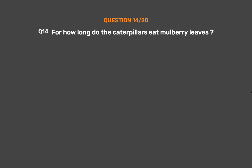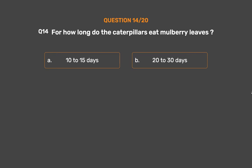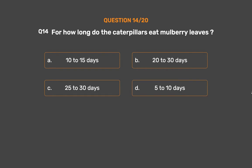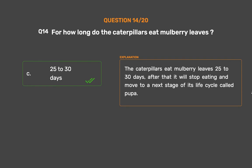Question No. 14. For how long do the caterpillars eat mulberry leaves? Option A: 10–15 days, Option B: 20–30 days, Option C: 25–30 days, Option D: 5–10 days. The correct answer is Option C: 25–30 days. The caterpillars eat mulberry leaves for 25–30 days. After that they stop eating and move to the next stage of their life cycle called the pupa.